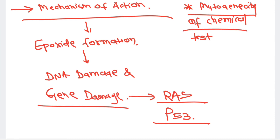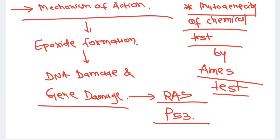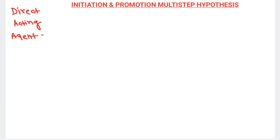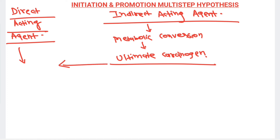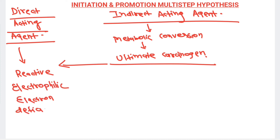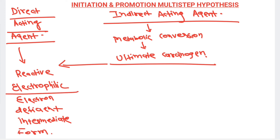The mutagenicity of chemicals can be tested by the Ames test. Now regarding the initiation and promotion multi-step hypothesis: chemical carcinogens, both direct and indirect acting, can cause cancer. Indirect acting agents need metabolic conversion to form the ultimate carcinogen. Both direct acting agents and ultimate carcinogens form reactive electrophiles, which are electron-deficient intermediates that bind with electron-rich agents like DNA, RNA, and proteins.